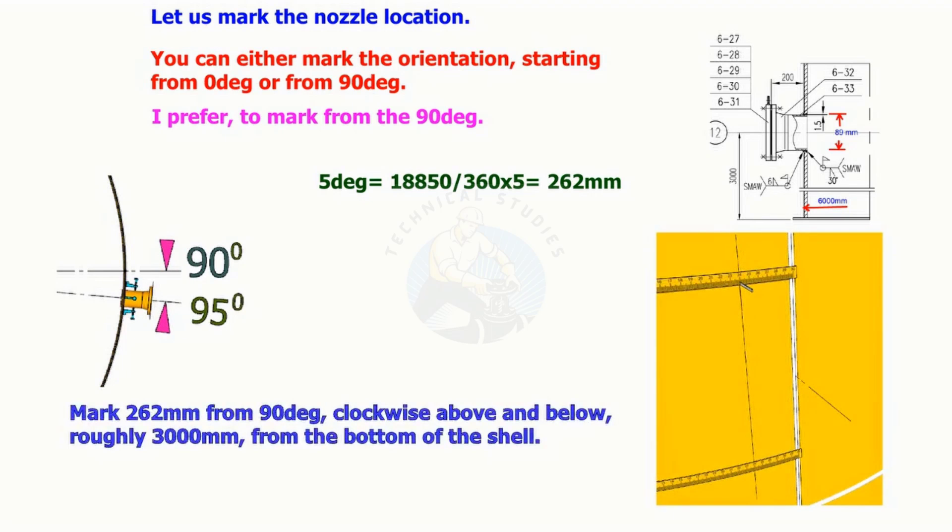Mark 262 millimeters from 90 degrees clockwise, above and below, roughly 3000 millimeters from the bottom of the shell. Draw a vertical line on these marks.